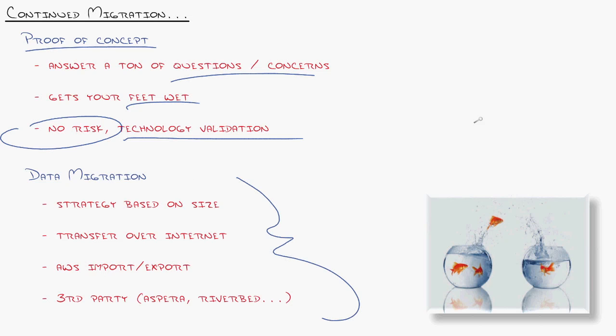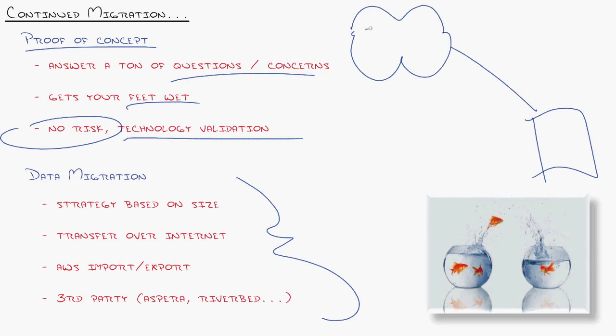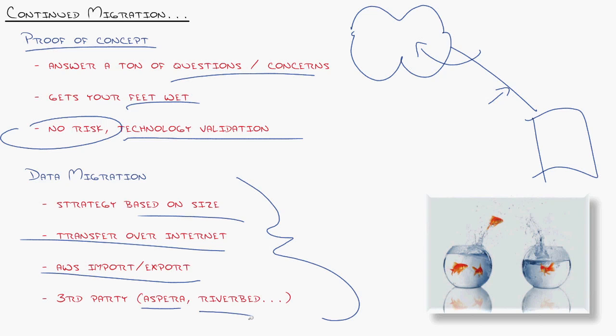So you get to the point where you migrate the data. How do you get the data from your business into the cloud? Depending on how much data, you could transfer it over the internet — with today's connections you could do that with a terabyte of data and not bat an eye. But you might say it's going to take too long, there's going to be too much drift at cut-over. So AWS has Import/Export where you can ship in a drive or maybe an entire array, like a NAS with 40 terabytes of data, and their engineers will import all of that for you. You can even create virtual machines in VMware and convert those into AMIs and thus running instances when they're in the cloud. There are also third parties like Aspera and Riverbed that have tools and processes to help you move data.